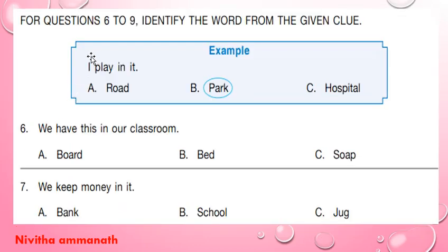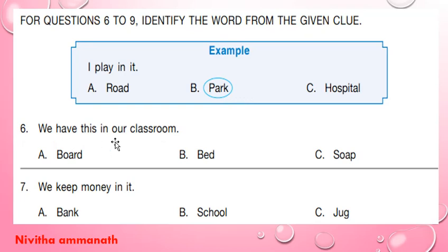For questions 6 to 9, identify the word from the given clue. For example, I play in it — road, park, hospital. The correct option is park. Question 6: we have this in our classroom — board, bed, soap. Board is in our classroom, so A is the correct option.